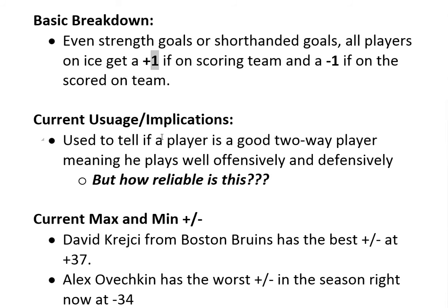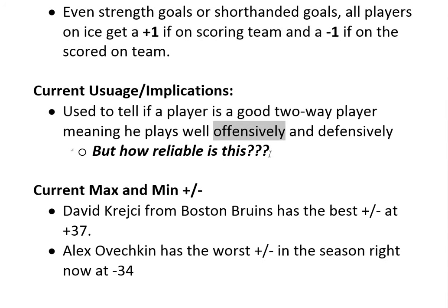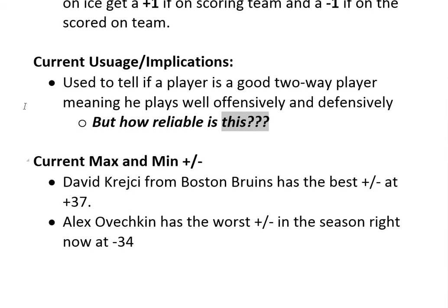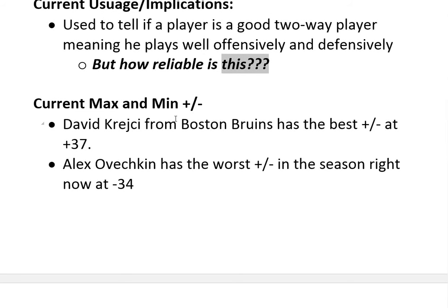The current usage and implications: it's basically used to tell if a player is a good two-way player, meaning he plays well offensively and defensively. But how reliable is this? I'll go over this by looking at the top and worst plus-minus in the league as of March 31st when this video is made. The current max and minimum plus-minus leaders are David Krejci from the Boston Bruins, with the best at plus-37, and Ovechkin with the worst at minus-34.